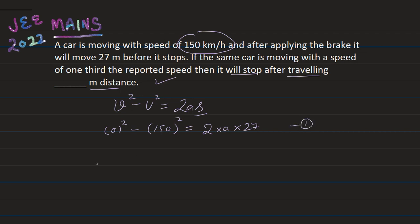This is our first condition. In the second case, same car, and now the speed is one-third the reported speed. So how much distance will it stop? Again we apply this equation: v² - u² = 2as. Again it stops, so 0 minus speed. One-third of 150 is 50. So it is 50² = 2 times a times s'. Let's suppose we have s'. We have to find out this distance.